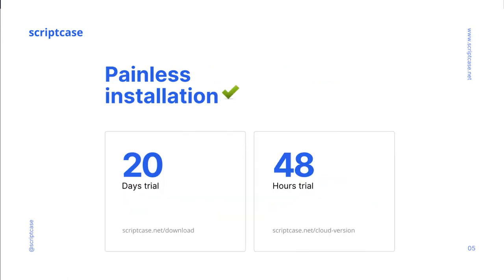You can test it yourself in a few simple steps: download, run, and install, and off you go. You can install Scriptcase locally on your computer or on a dedicated web server. It is free to use for 20 days, so you can start creating your own projects today and give it a try before you buy.